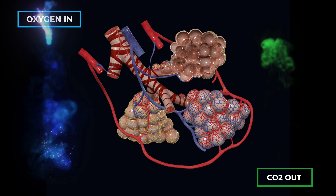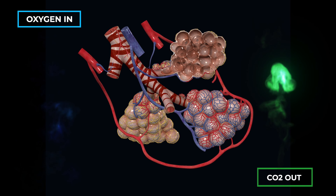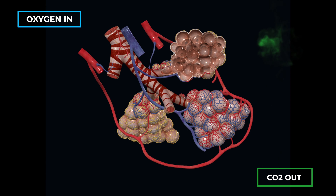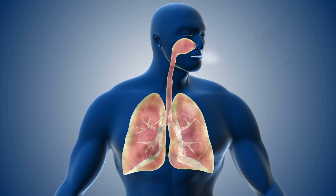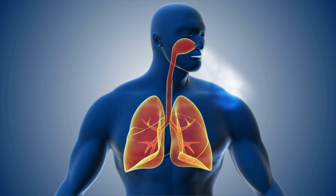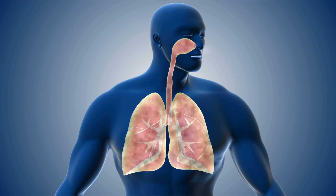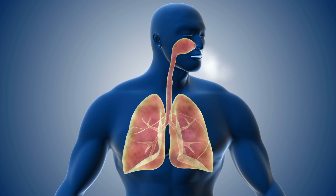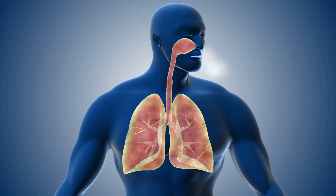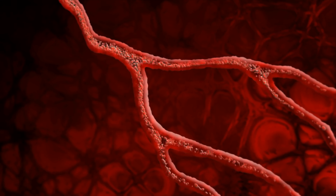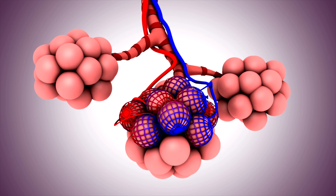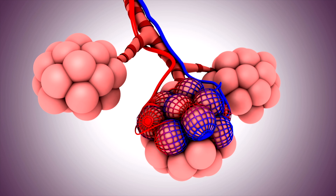Oxygen from the air diffuses into the bloodstream, and carbon dioxide diffuses into the alveoli to be exhaled. Ventilation refers to the movement of gas between the atmosphere and the alveoli during inspiration and expiration. Perfusion is the movement of blood through the pulmonary capillaries. A good match between perfusion, or blood supply, and ventilation, or gas supply, must be present for optimal gas exchange.